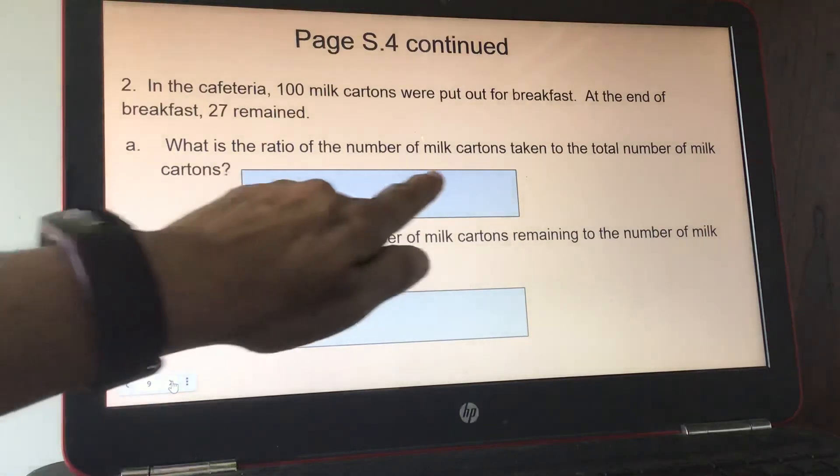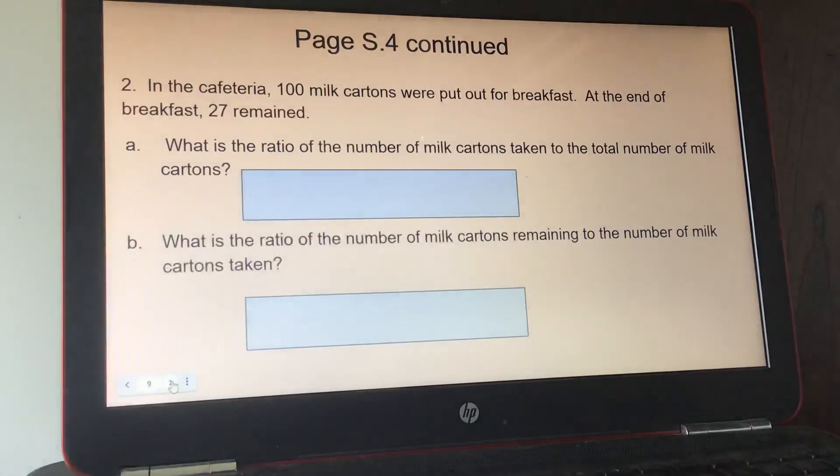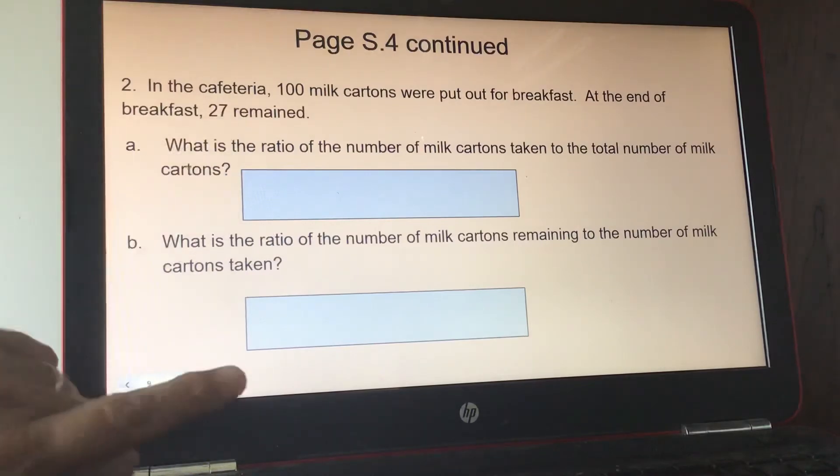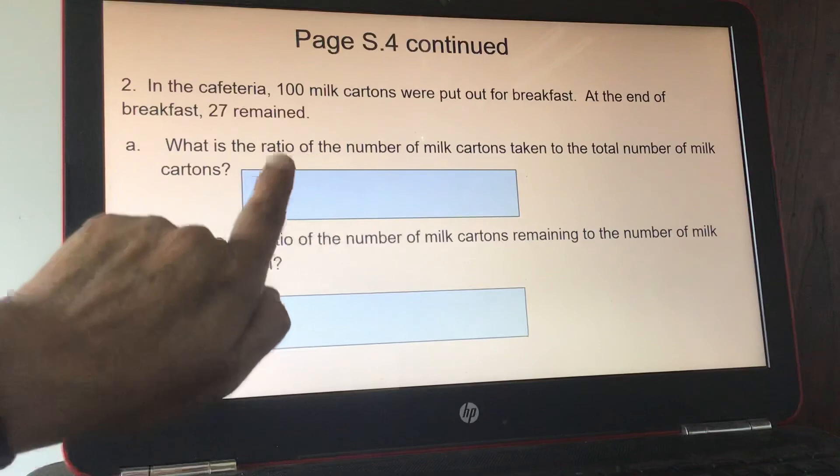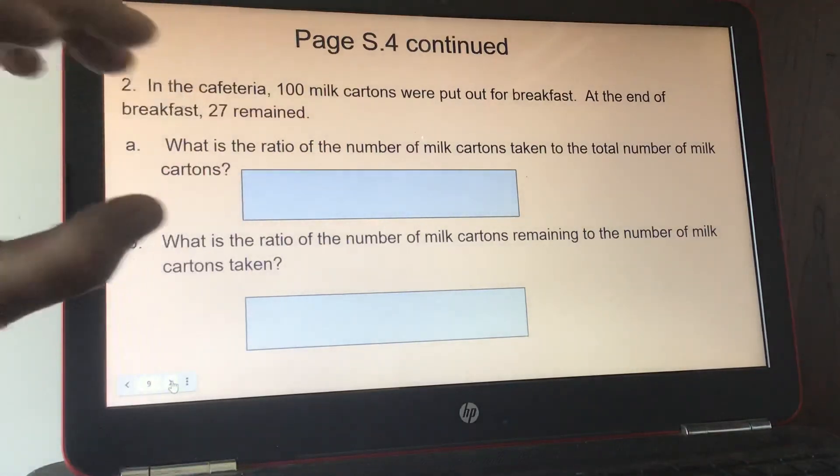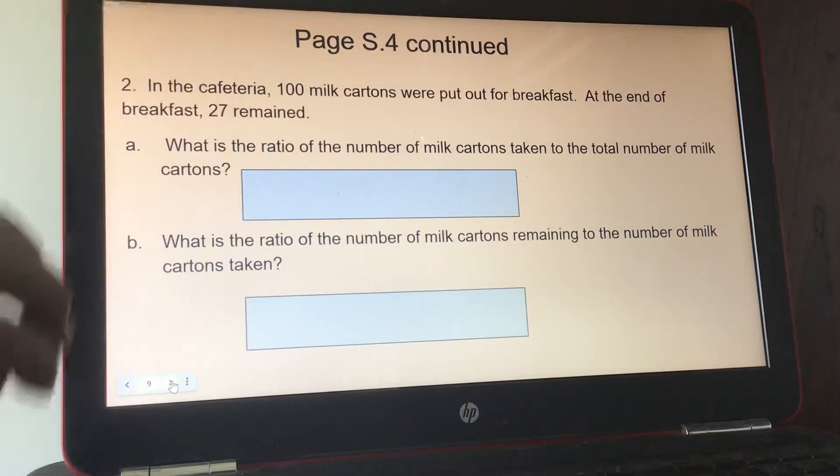So they ask you the ratio for the number of milk cartons. So milk cartons would be first to the total number of milk cartons. And then B, it says, what is the ratio of the number of milk cartons remaining to the number of milk cartons taken? So remaining they gave you, to taken they gave you as well. Oh, no, they didn't. You subtracted it. So whatever your number was, when you subtracted 27 from 100, that's how many were taken. So you can do that.